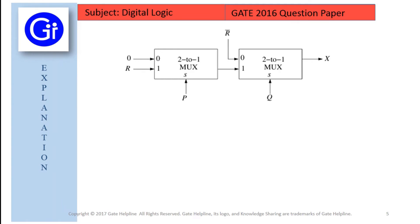So friends, as we have discussed the working of a 2 to 1 multiplexer, now we will try to solve the output of this X, that is the output coming from these two multiplexers. So first of all, we will try to solve this first mux.